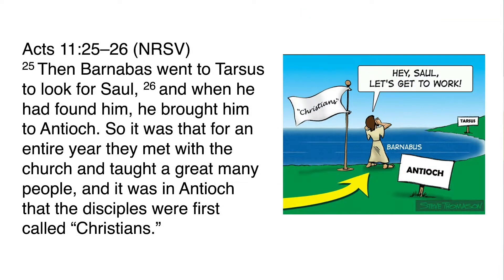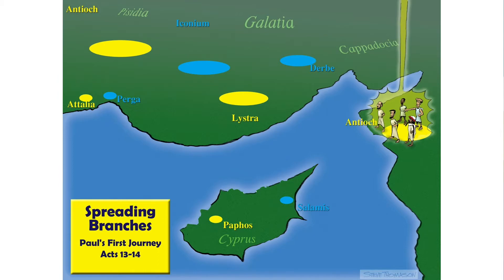We skip to chapter 11 verse 25 before we pick up the story of Saul again. It says, 'Then Barnabas went to Tarsus to look for Saul, and when he found him, he brought him to Antioch. So it was that for an entire year they met with the church and taught a great many people.' It was in Antioch that the disciples were first called Christians. In the city of Antioch there was a beautiful multi-ethnic group of leaders who came together and commissioned Paul — his Greek name — and Barnabas to take the message of Jesus across the sea.